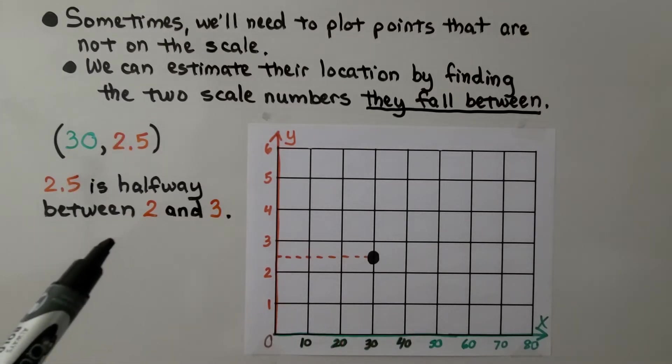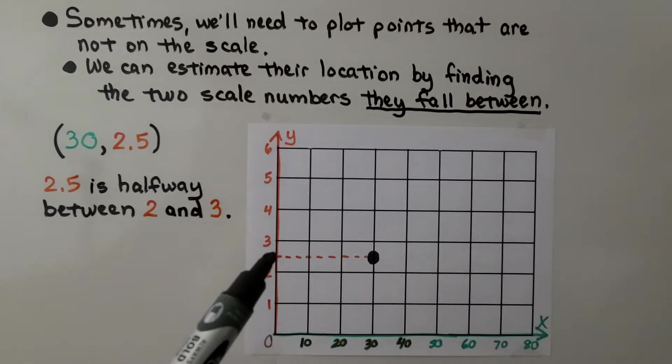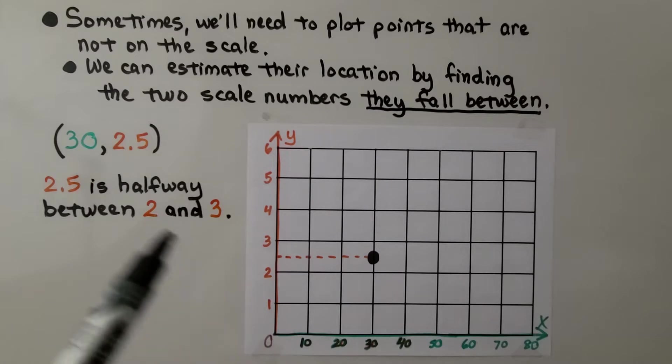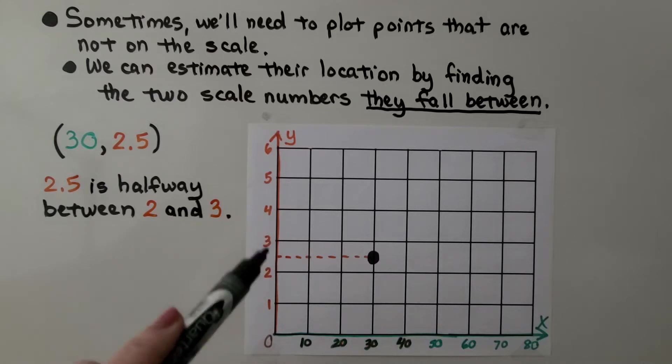And we think, well, 2 and a half is halfway between 2 and 3, so it would be right here. We find 30, our x coordinate, and we find out where it meets 2 and a half, and it would be right there. So sometimes when graphing a point, you're going to have to look at the numbers that it's between to help you find where to plot your point.